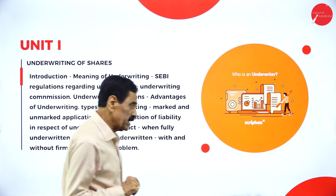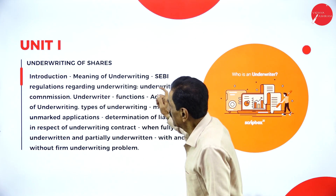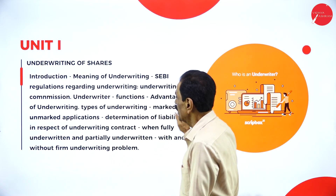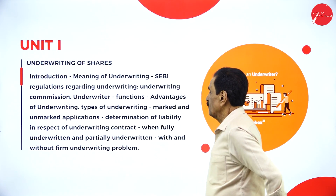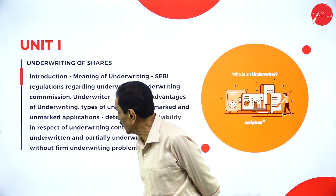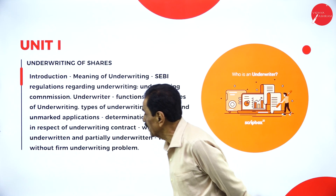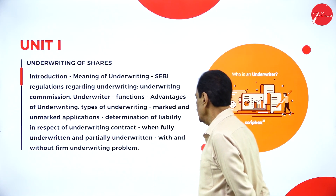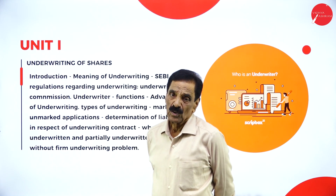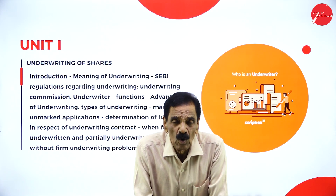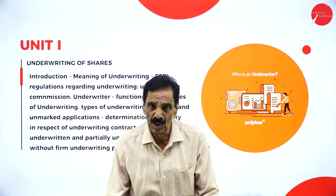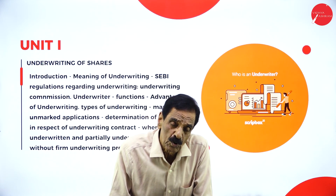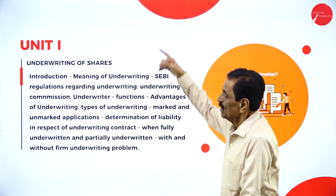Unit 1 covers: meaning of underwriting, SEBI regulations regarding underwriting, underwriting commission, underwriter functions, advantages of underwriting, types of underwriting, marked and unmarked applications, and determination of liability in respect of underwriting contracts — fully underwritten and partially underwritten, with and without firm undertaking, and problems. In the examination, one question will be asked for 10 marks and another for 15 marks, totalling 25 marks.